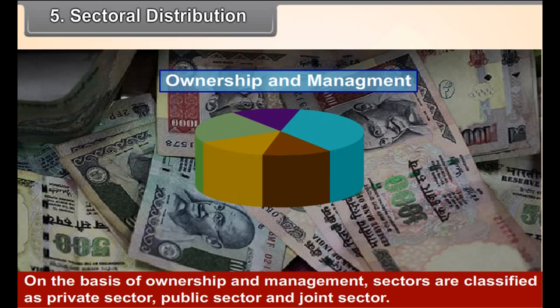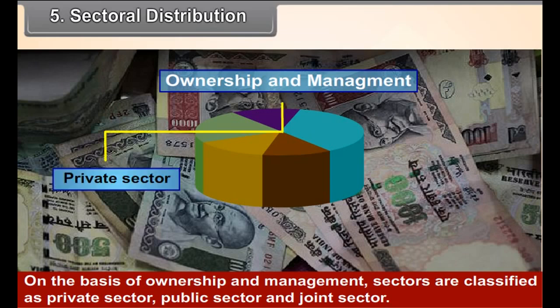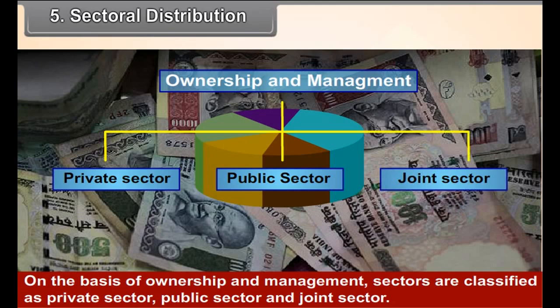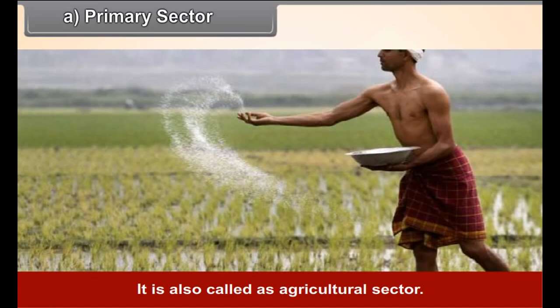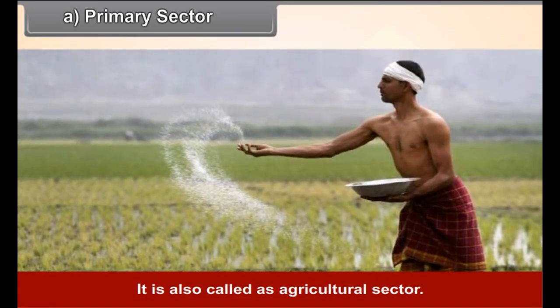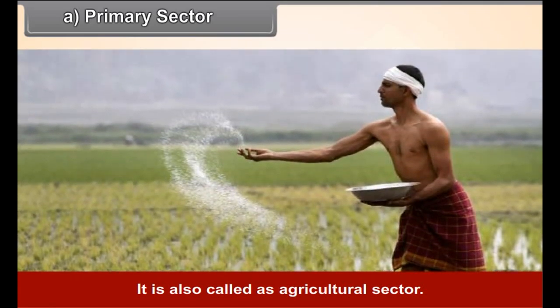On the basis of ownership and management, sectors are classified as private sector, public sector, and joint sector. On the basis of the nature of activities, various productive activities are mainly classified into three sectors.